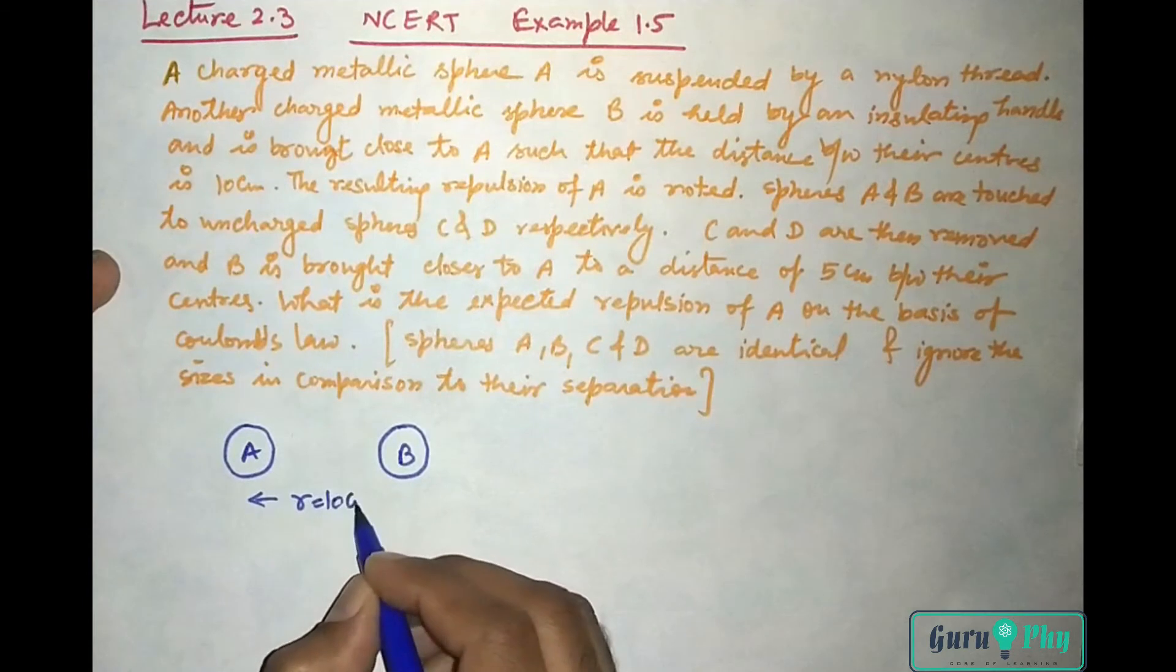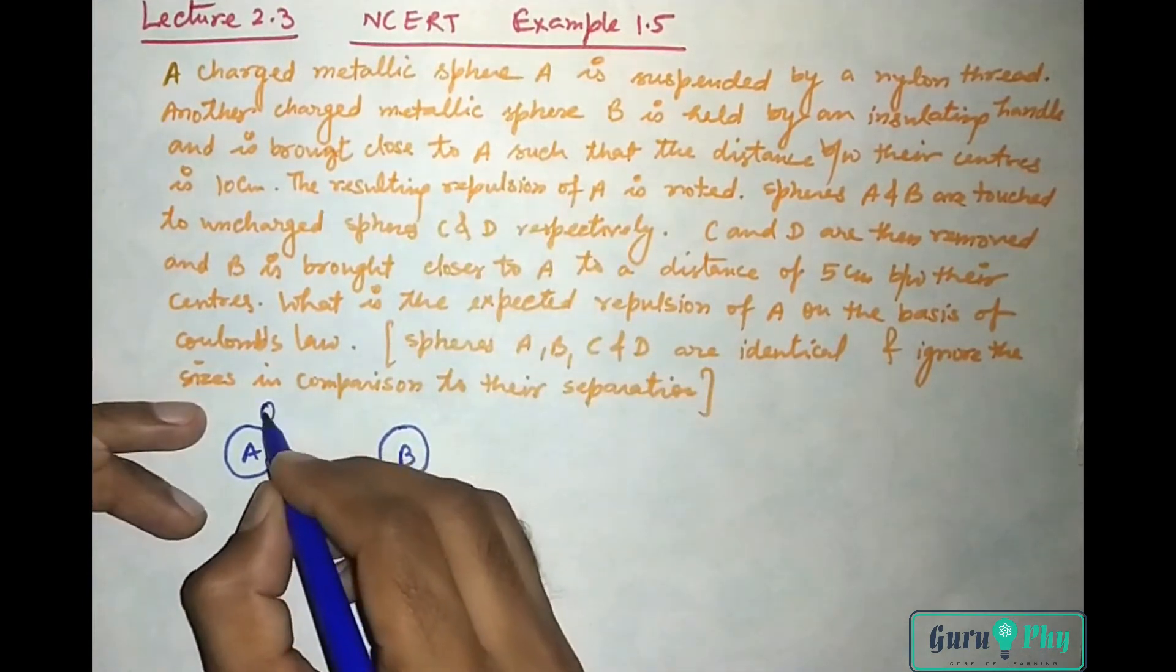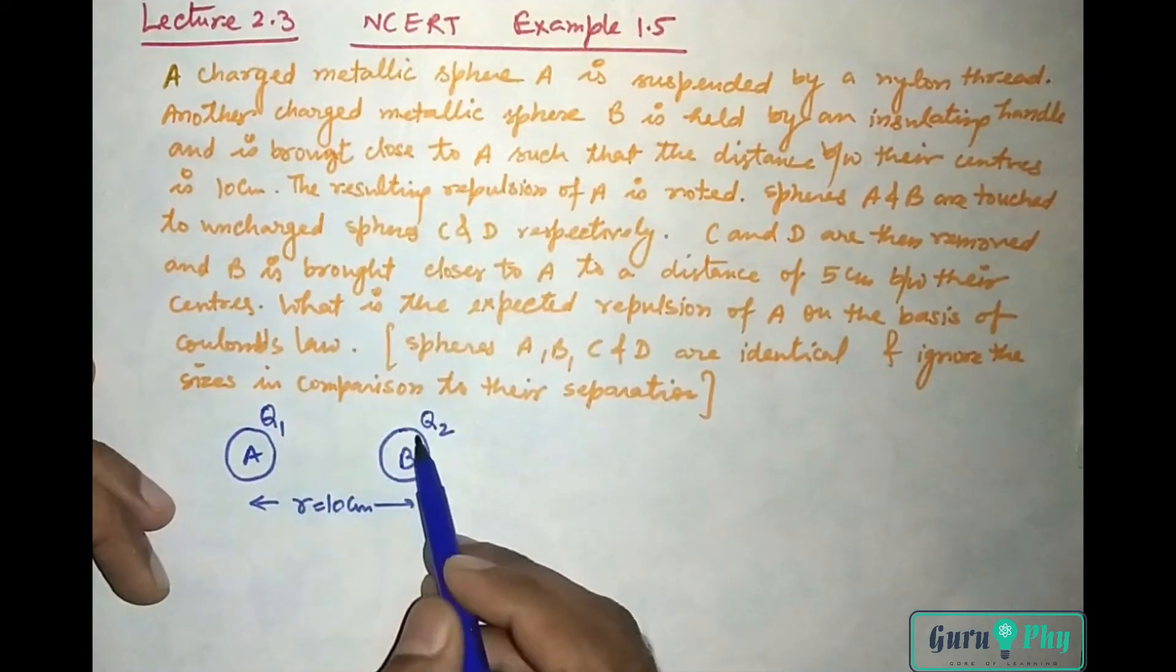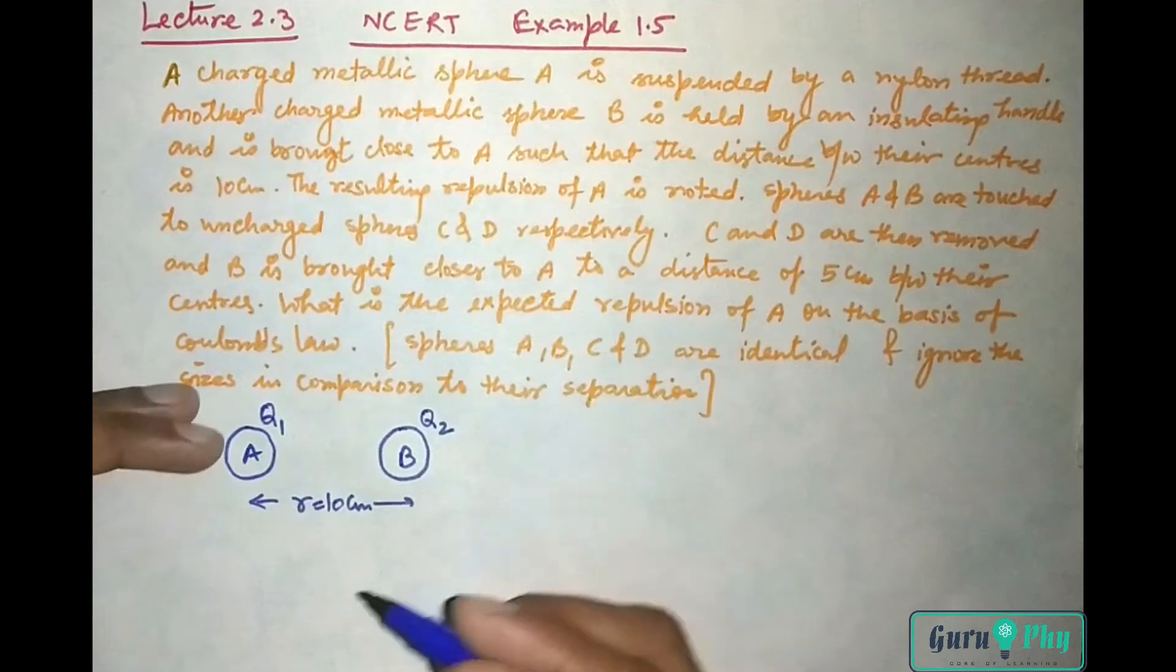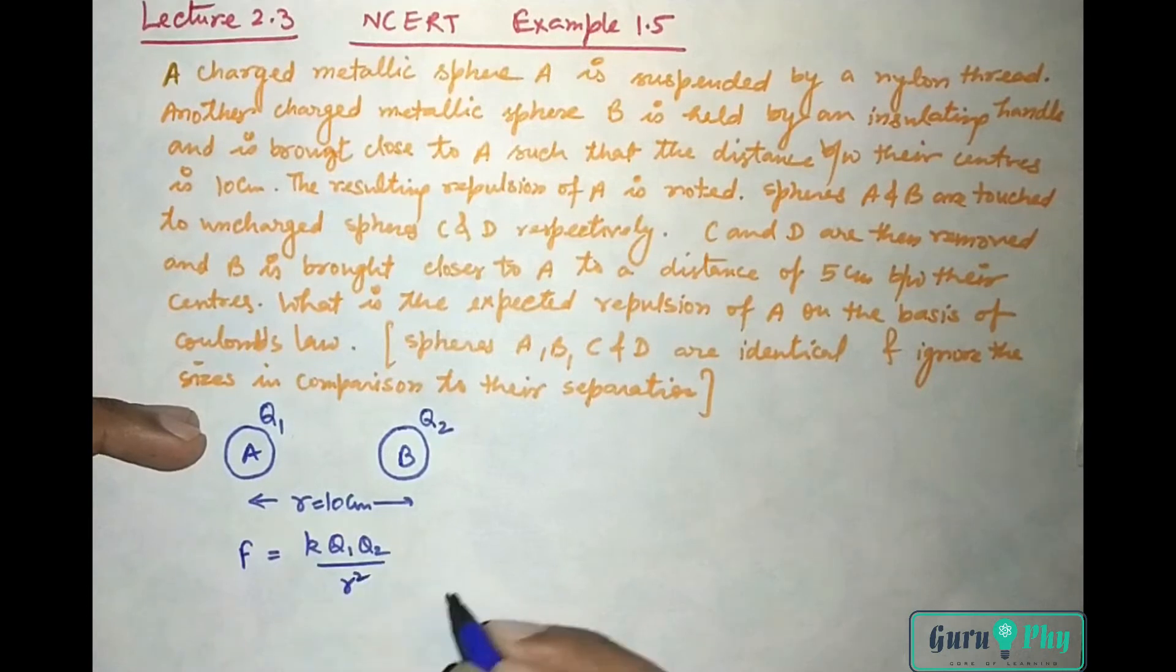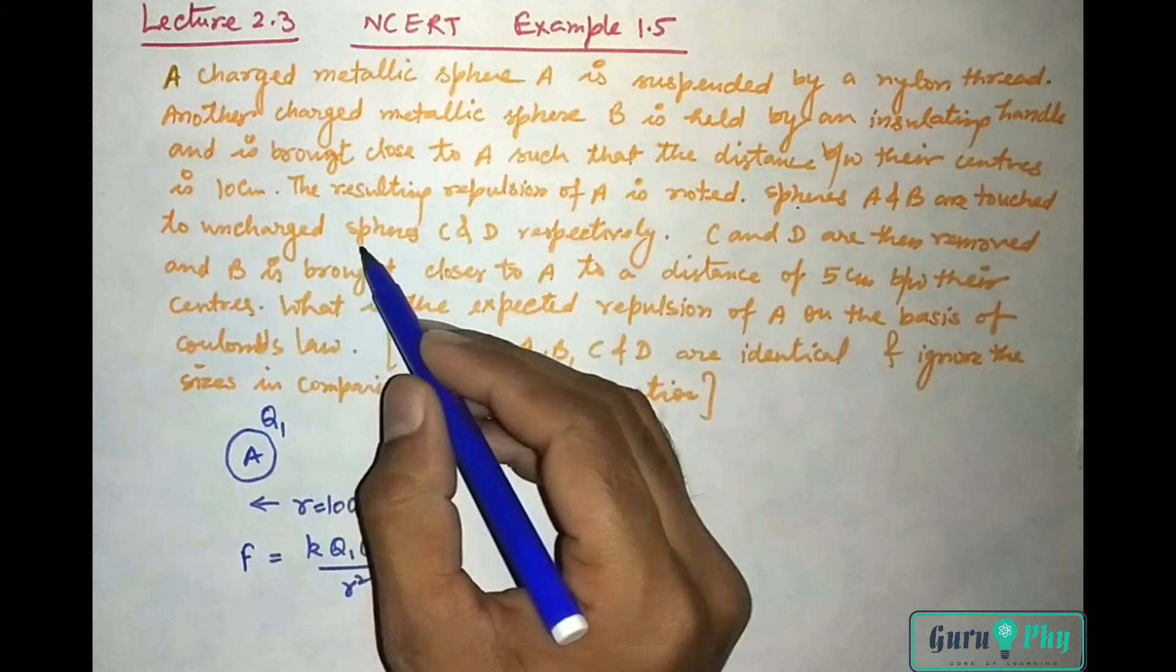Both charges will be similar, one Q1 and the other one Q2, so both positive or negative. The force will be K Q1 Q2 upon R squared. Now spheres A and B are touched to uncharged spheres C and D respectively.